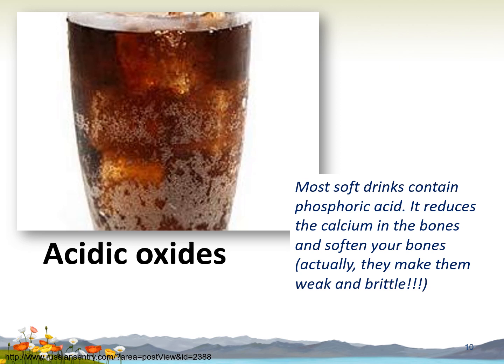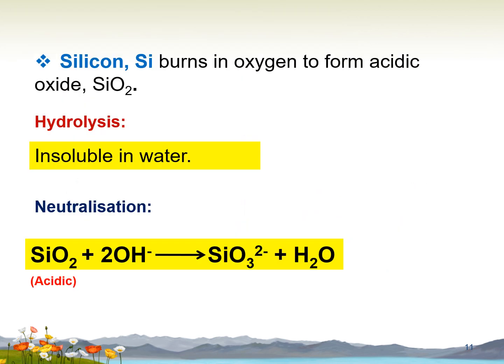Most soft drinks contain phosphoric acid, which is one of the acidic oxides. It reduces the calcium in bones and makes them weak and brittle. Silicon burns in oxygen to form acidic oxide SiO₂. There is no hydrolysis reaction of silicon dioxide with water because silicon dioxide is insoluble in water. For the neutralization reaction, silicon dioxide reacts as an acidic oxide with OH⁻ to form SiO₃²⁻, or silicate ion, and water.